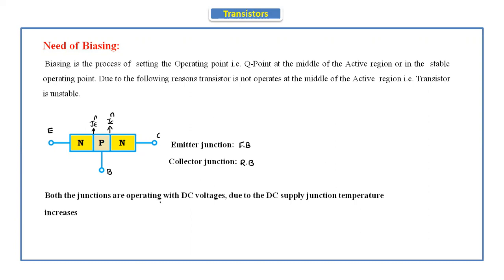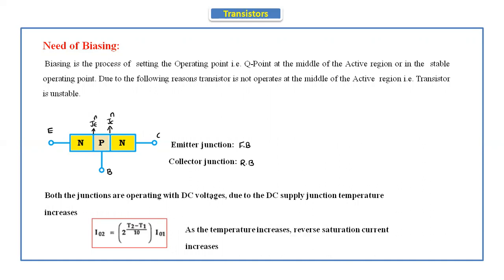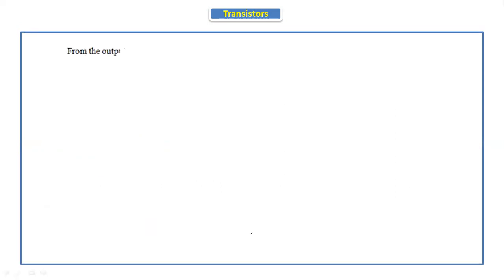If the temperature increases, we use the formula for the effect of temperature on the diode: I02 = 2^((T2 - T1)/10) × I01, where I02 and I01 are the reverse saturation currents and T1 and T2 are the temperatures. So if the temperature increases, the reverse saturation current increases. Because of the DC supply voltage, the transistor junction temperature increases, and as temperature increases the reverse saturation current also increases.